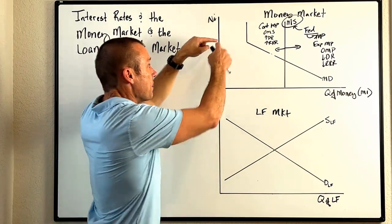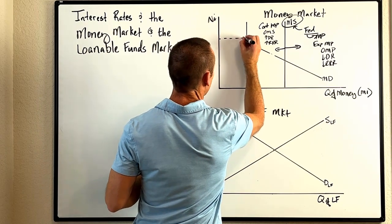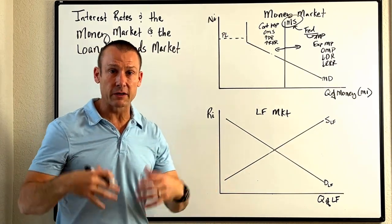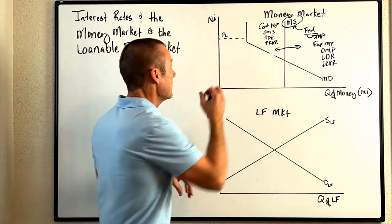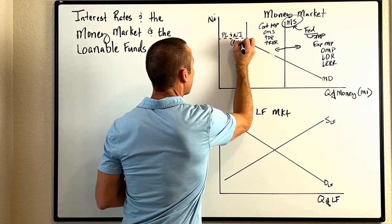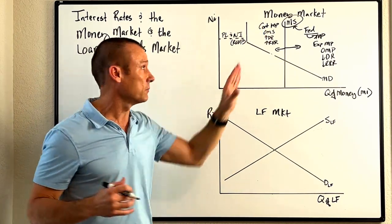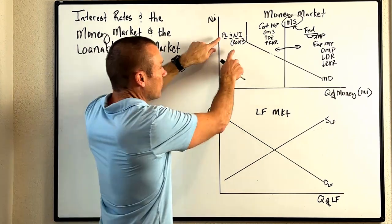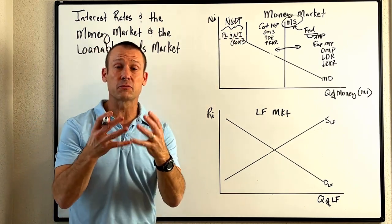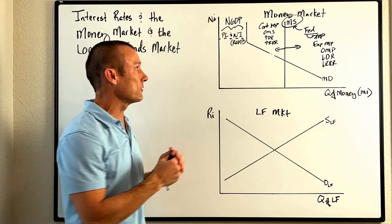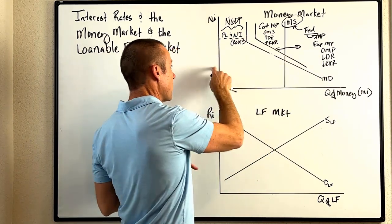What determines transaction demand — the horizontal distance of that vertical segment? It's not the nominal interest rate. The two key determinants are the price level and national income (real GDP). If the price level goes up, I need more money to buy goods and services, so I shift that transaction demand bar to the right, and the nominal interest rate goes up.